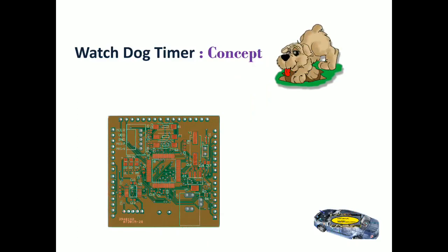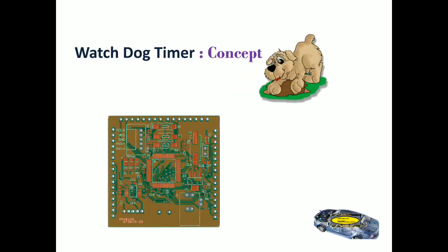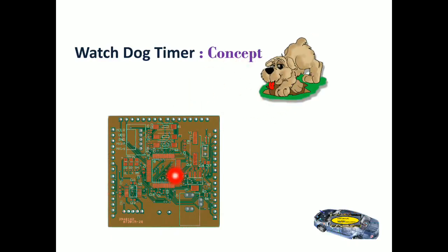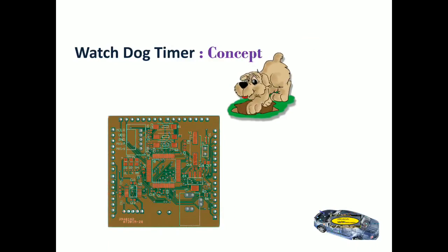The watchdog continuously keeps on working — it is not caring about what the ECU is doing, but it continuously monitors whether the ECU is working or not. That is the purpose of the watchdog timer: to monitor whether the ECU is working properly. Once the ECU is not working properly, the watchdog will jump in and reset the particular system from the beginning.